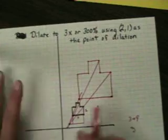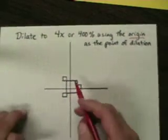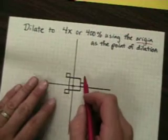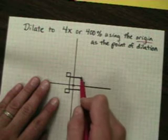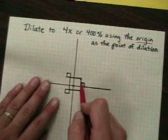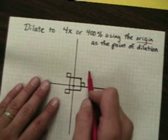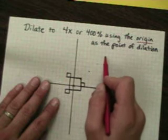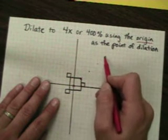Now let's look at one from the inside of the shape. This one wants you to use the origin — remember that the origin is the center point. We're doing it 4x. I'm going to start with this point right here: over 2, up 2 — that's 100%. I need to do it 3 more times. Over 2 up 2. Over 2 up 2. Over 2 up 2. 1, 2, 3, 4 — so this is the one I really want right there.